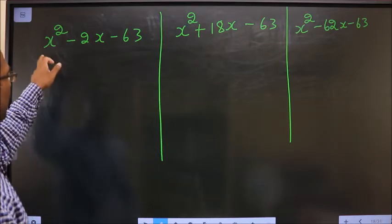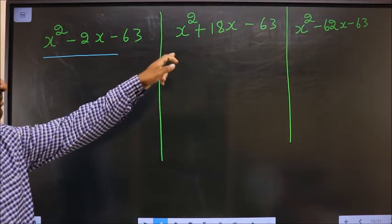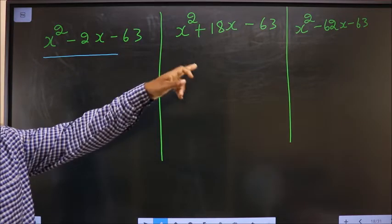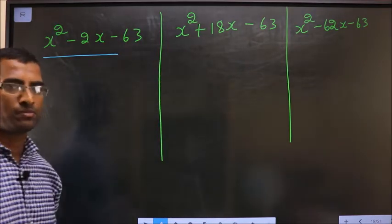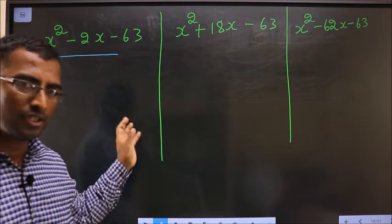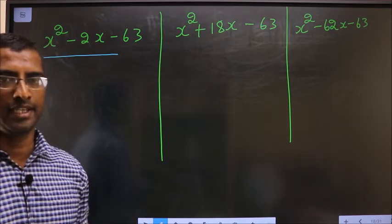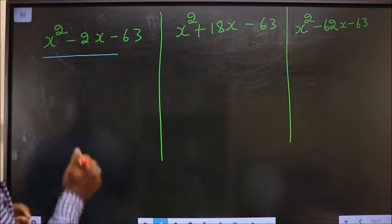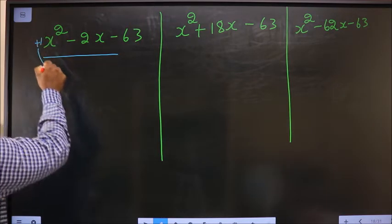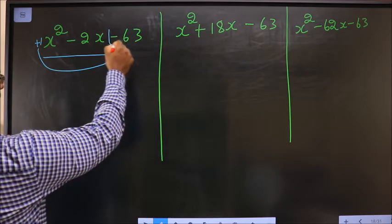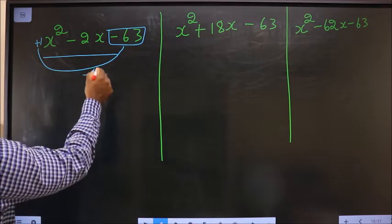Factorize x² - 2x - 63, x² + 18x - 63, and x² - 62x - 63. In this video, I want to tell the difference between the three. In step one, whatever number we have here, we should multiply it with the constant — that is minus 63 in this case.